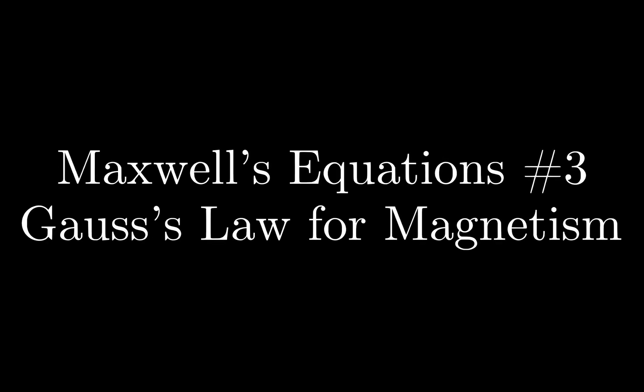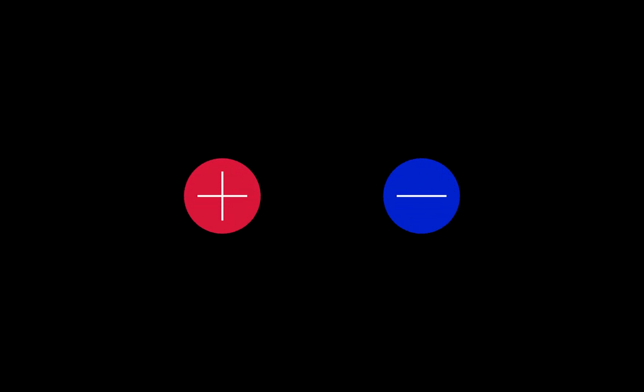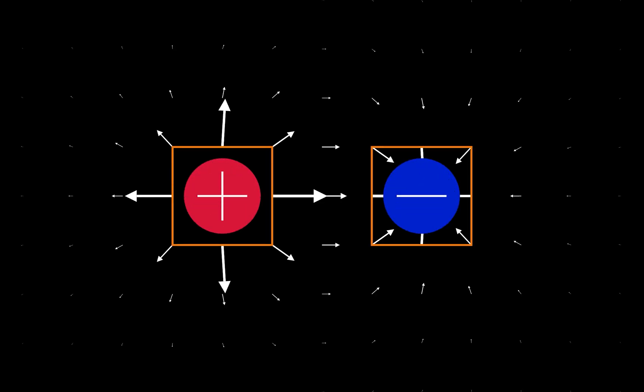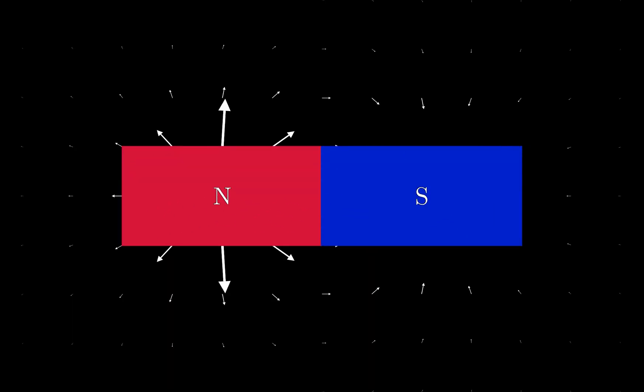In the last two videos, we have discussed electric fields, what creates them, what they look like, and how to use Gauss's law to analyze them. It seems only fitting that after devoting so much time to electric fields, we should spend some time investigating magnetism and the second of Maxwell's equations, which is often referred to as Gauss's law for magnetism.